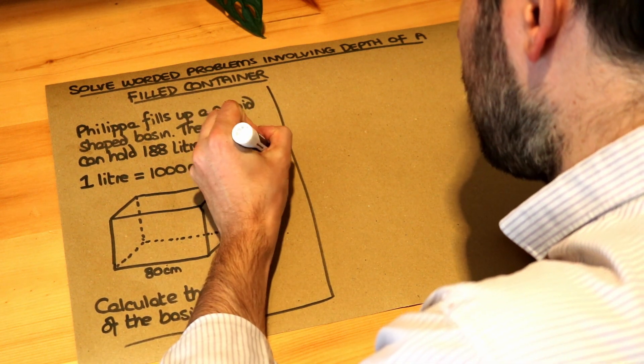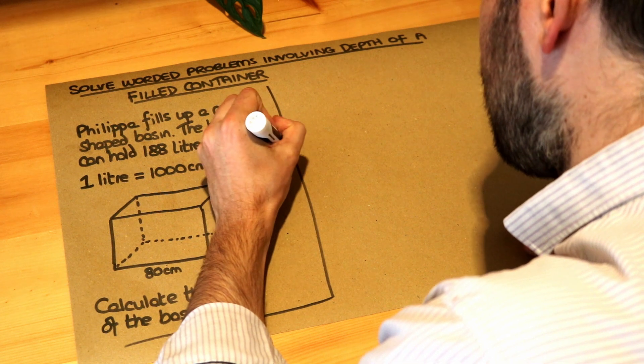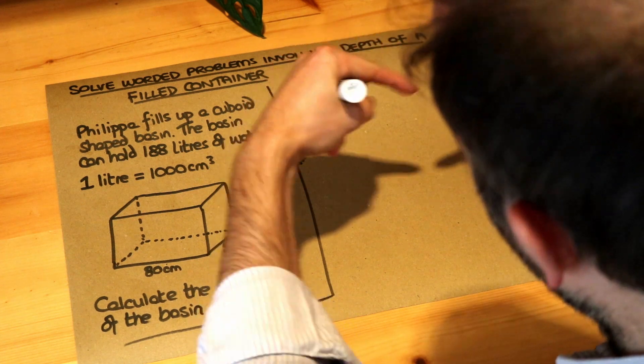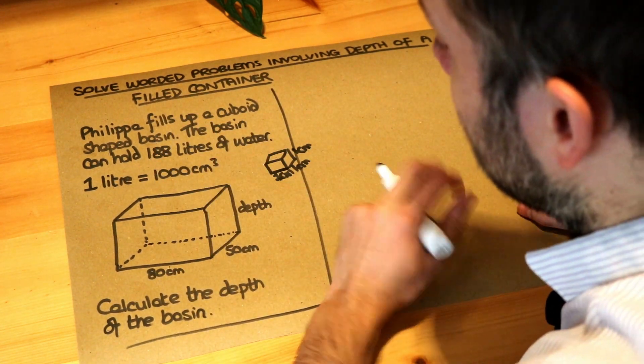Remember each centimetre cubed is just a cube of one centimetre by one centimetre by one centimetre. So it's quite a small little cube of water and if we have a thousand of those that would be a litre of water.